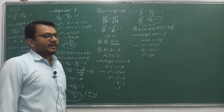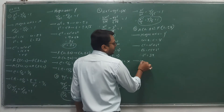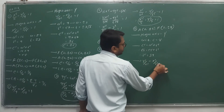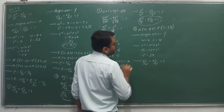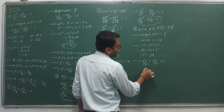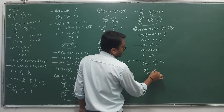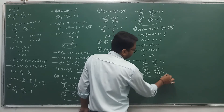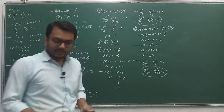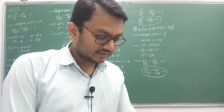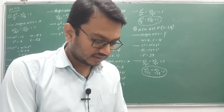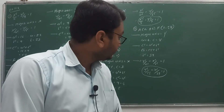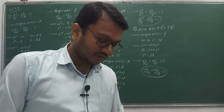Major axis is Y, so standard equation: y²/a² minus x²/b² = 1. Putting values: y²/25 minus x²/39 = 1. Let's verify — number 8 answer: y²/25 minus x²/39 = 1. Absolutely correct.